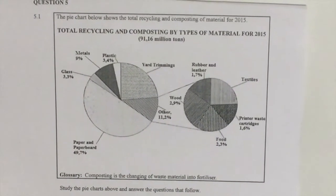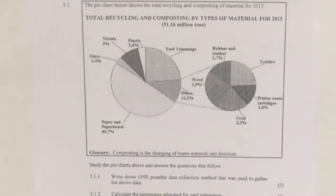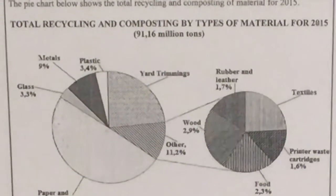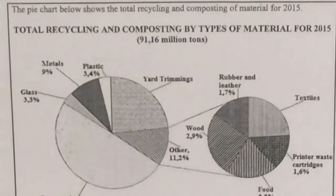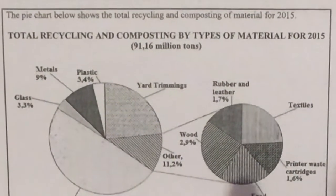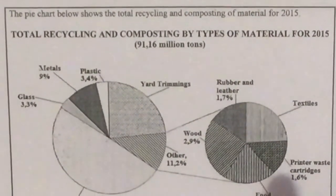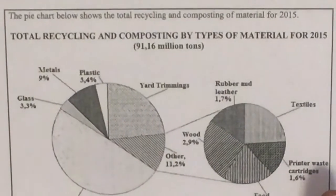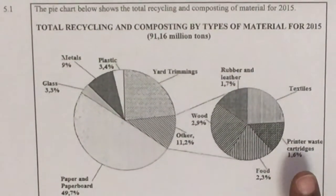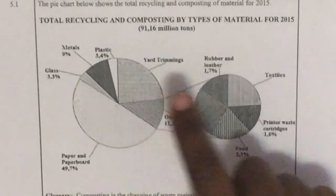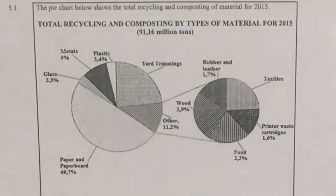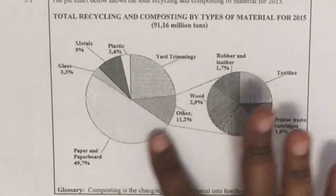We're going to look at an example from a previous paper. In an exam it's very important to read and understand what the chart is about. This one says: the pie chart below shows the total recycling and composition of material for 2015.